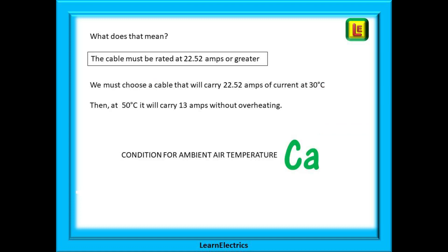We should choose a cable that will take at least 22.5 amps. What does this mean? We must choose a cable that will carry 22.52 amps of current at 30 degrees centigrade since 30 degrees is our reference temperature. The table then tells us that a cable that can carry 22.52 amps at 30 degrees will be able to carry 13 amps at 50 degrees without overheating.